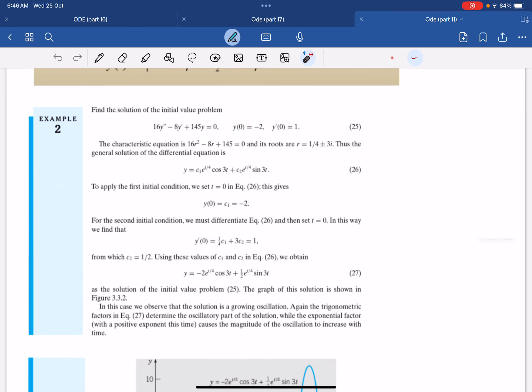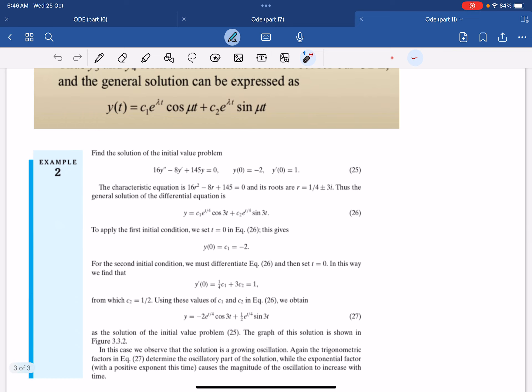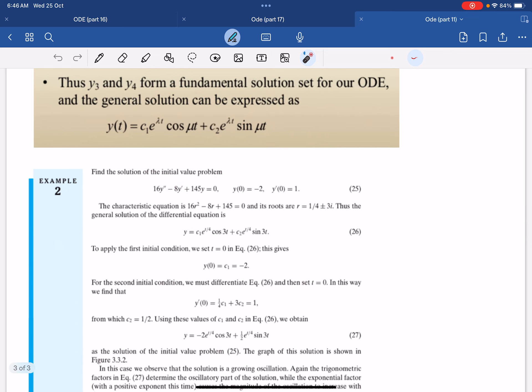So the general solution will then be, if you follow this, c1 e to the t over 4 cosine 3t plus c2 e to the t over 4 sine 3t. If you apply the first initial condition, you see that c1 is minus 2.